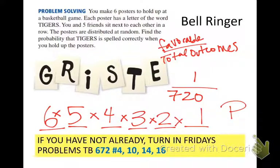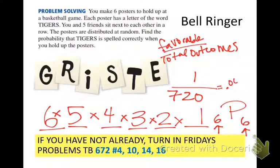So it's a permutation. How many posters were there? Six. How many people were there? Six — you and five friends. Six people. So the total number of objects and the total number that you're using — you're using all six. You would hit S to D and get 0.00138. That's not percent — move it over twice and you get 0.14%.